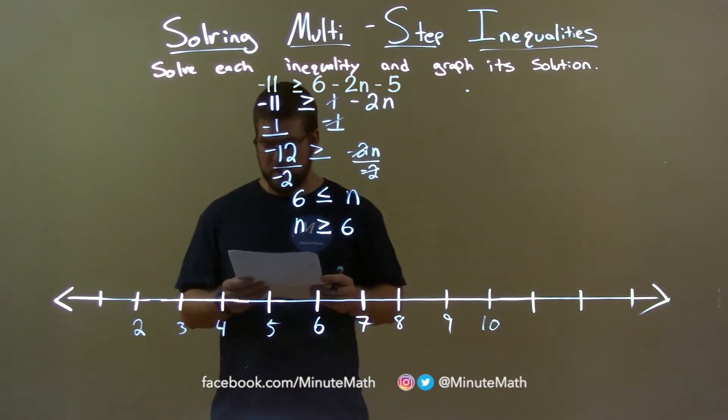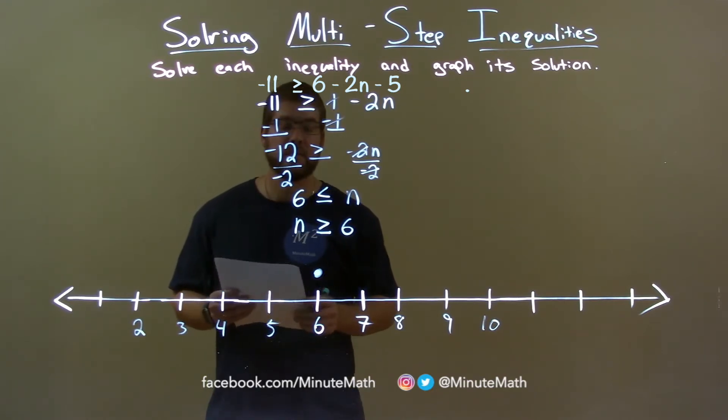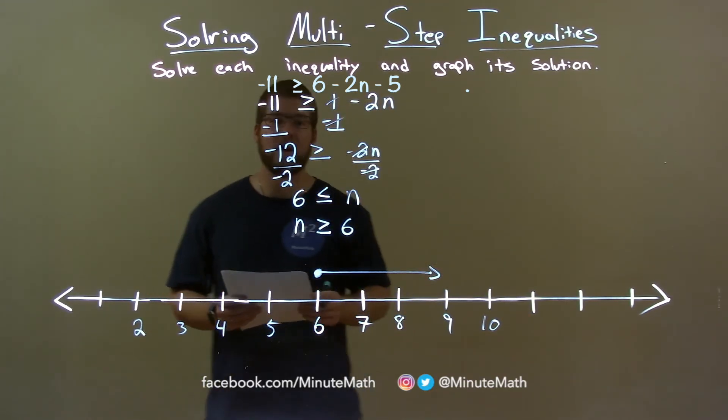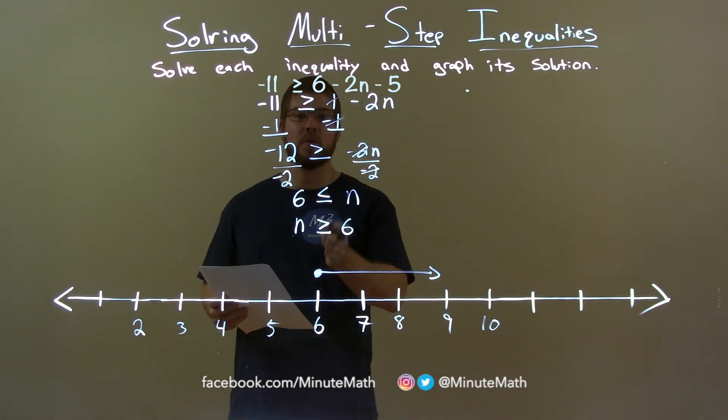If n is equal to 6, that means we have a closed circle there at 6. n is also greater than 6, so the arrow goes to the right. And there we have it. Our graph matches our final answer. n is greater than or equal to 6.